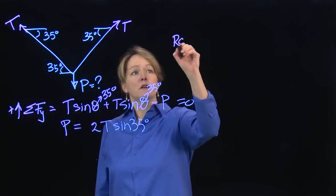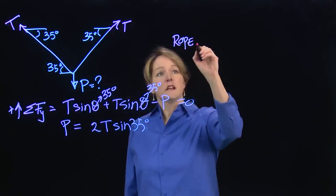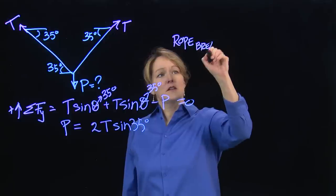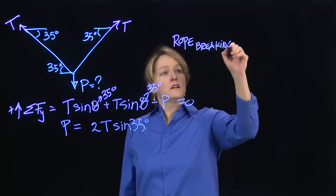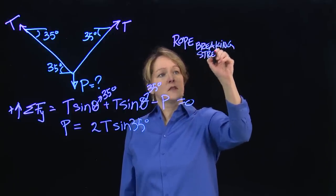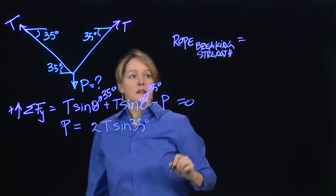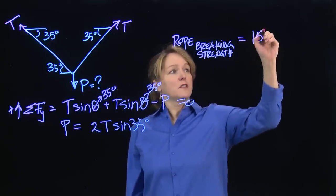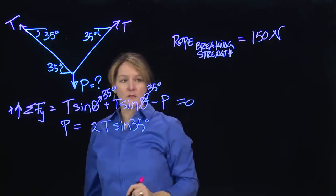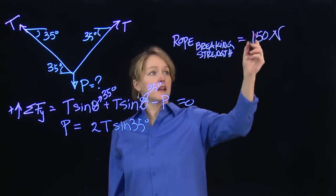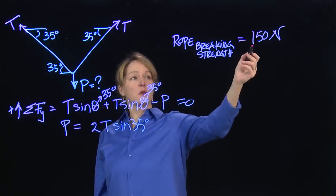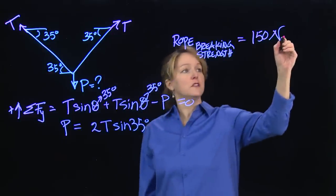So I happen to know that the rope that Owl used has a certain breaking strength. That's what an engineer will use as a breaking strength for a certain diameter rope. And the breaking strength of this rope is 150 Newtons. So I can use that quantity. So if that's when the rope's going to break, I'm going to substitute that in for T.